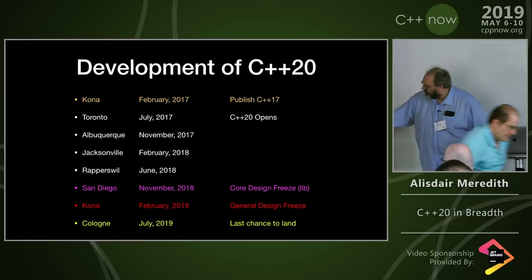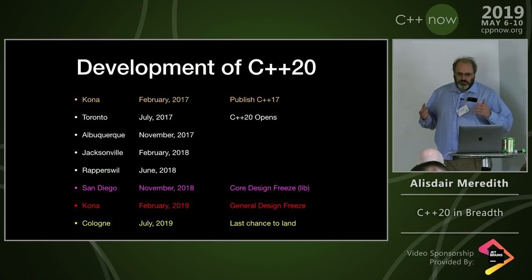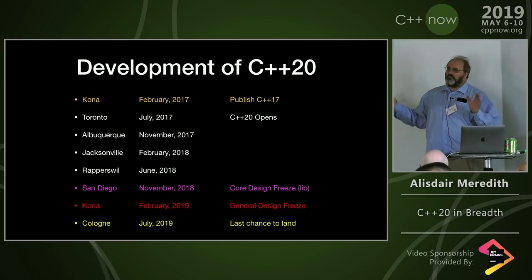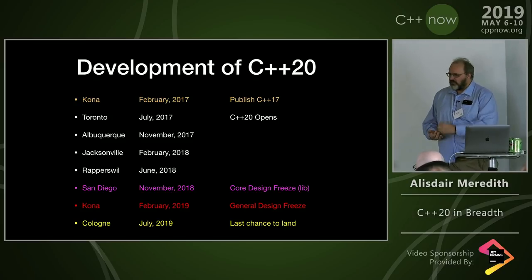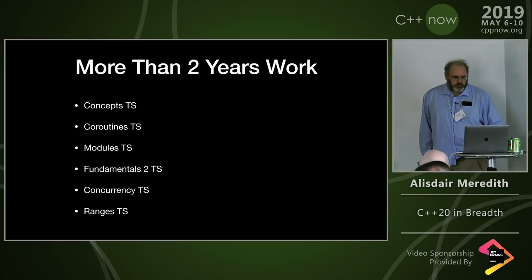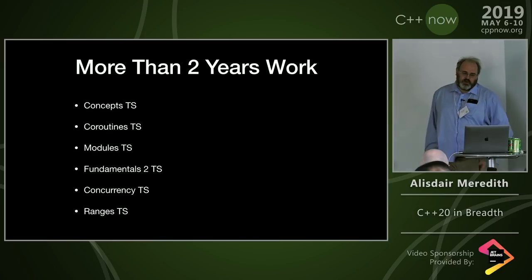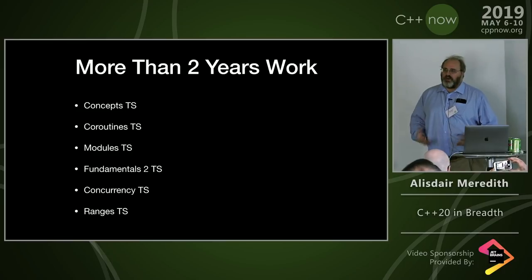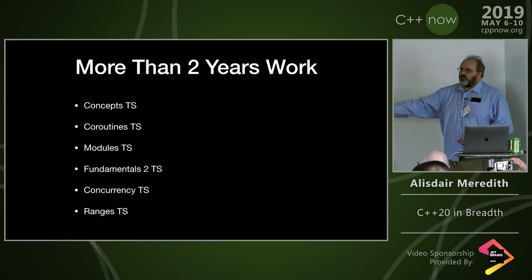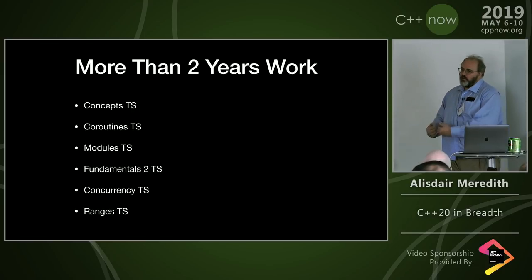We've got one more week to finally land all the work we've approved, and we hope to complete that in Cologne. I might be describing a few things that don't actually make it into C++20, but I believe we've got a really strong shot at everything I'm talking about. The reason C++20 is so big is that it's more than two years of work — six different Technical Specifications that we've been working on over the last decade are finally shipping as part of the main language standard.